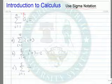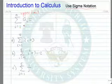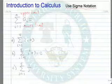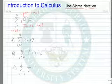Here n is called the upper limit. i equals 1, 1 is called the lower limit, i is called the index, and here we have a sub i is the thing we are taking the summation of.